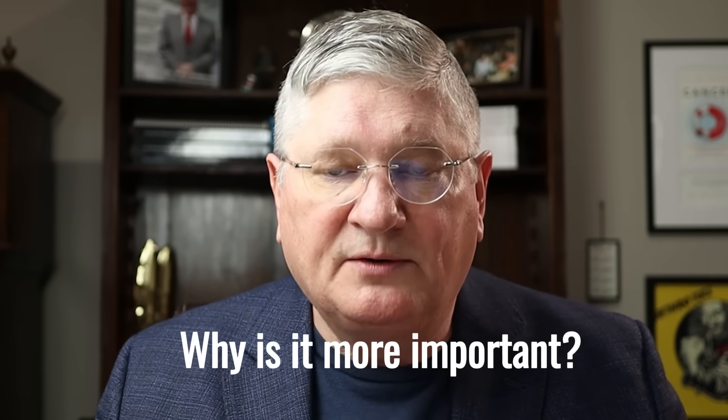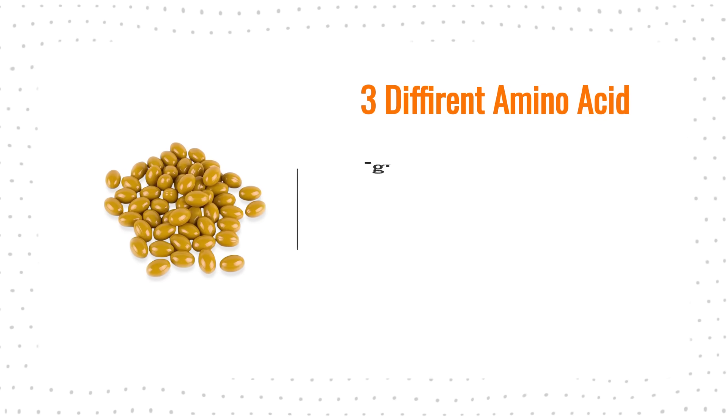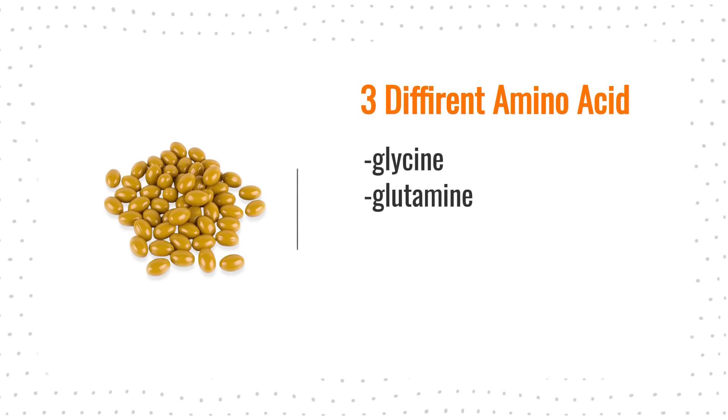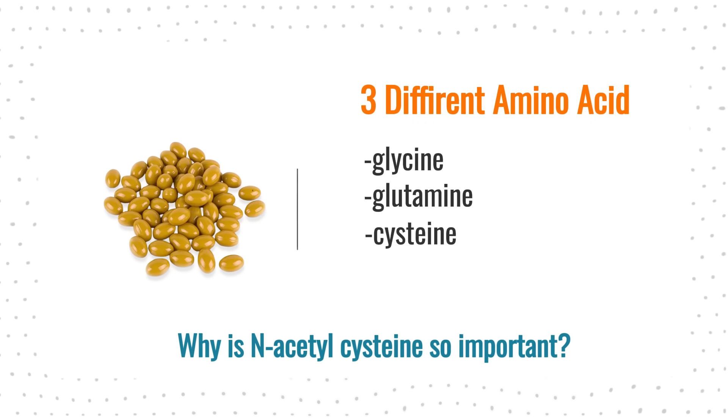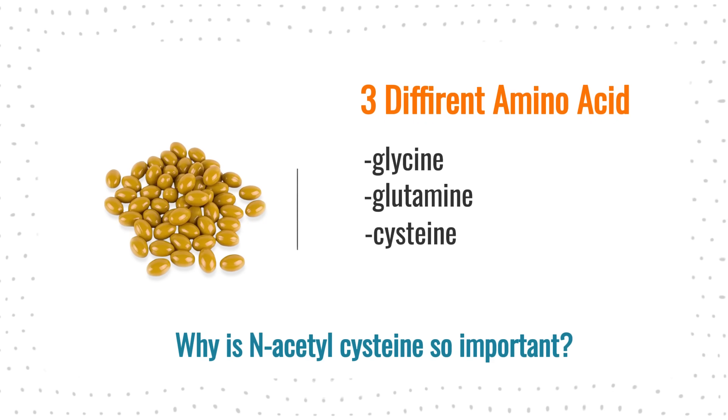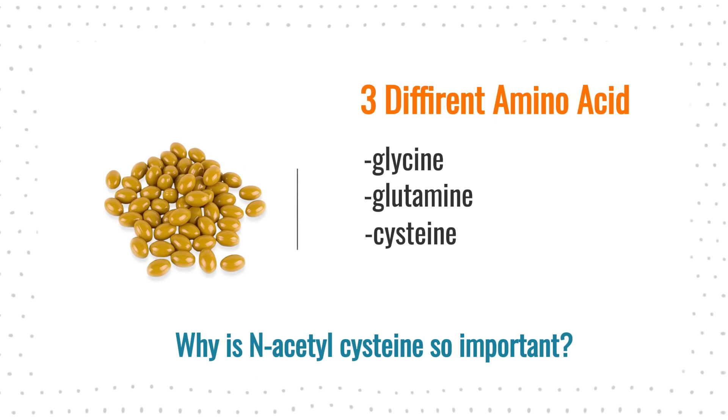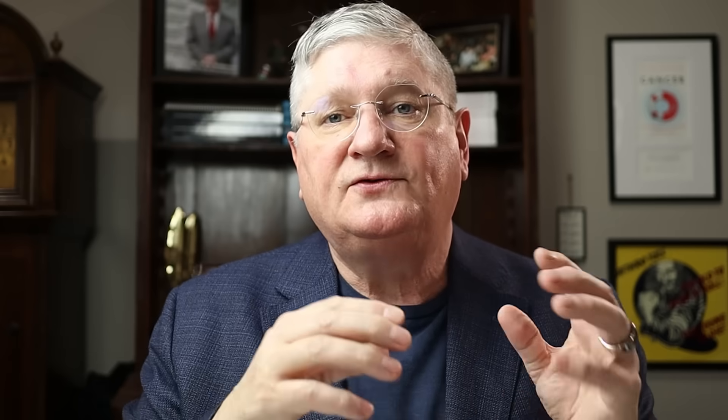When we get to N-acetylcysteine, people ask why it's more important. Glutathione is made from three different amino acids: glycine, glutamine, and cysteine. So why is cysteine — or N-acetylcysteine, as it's used mostly orally — so important? It's because of the three amino acids that make glutathione, N-acetylcysteine is the rate-limiting amino acid.